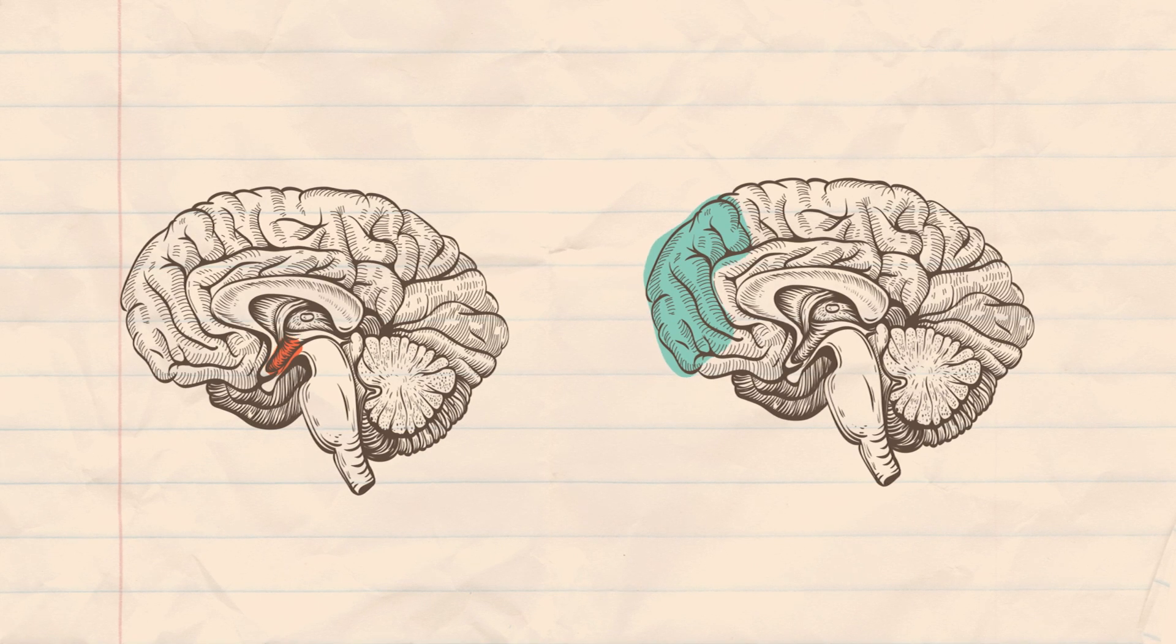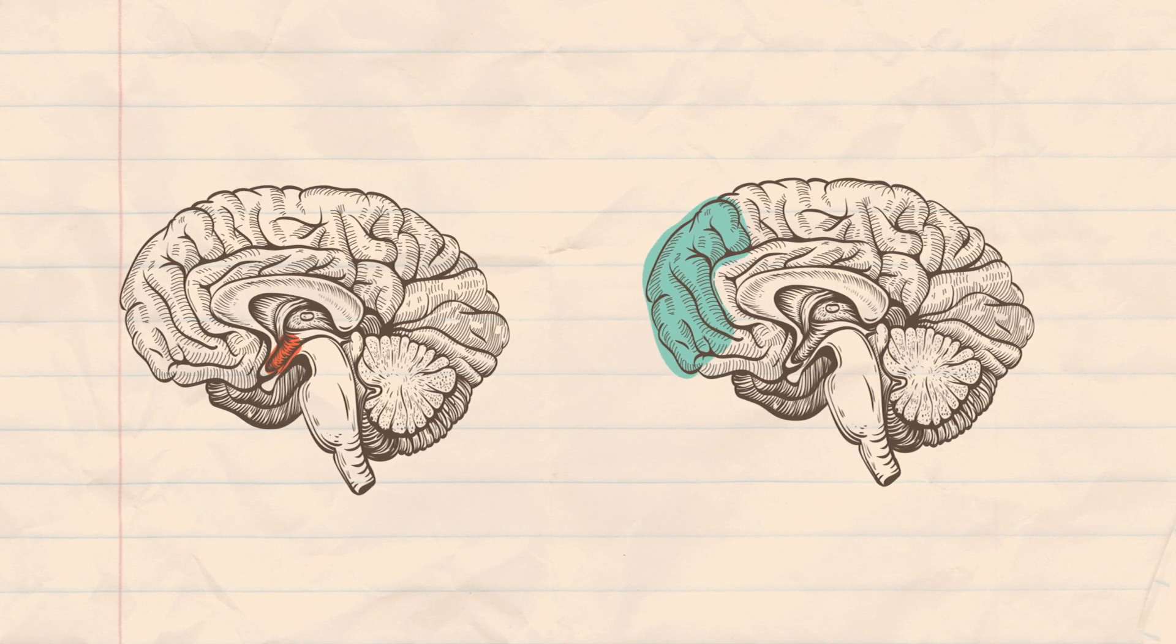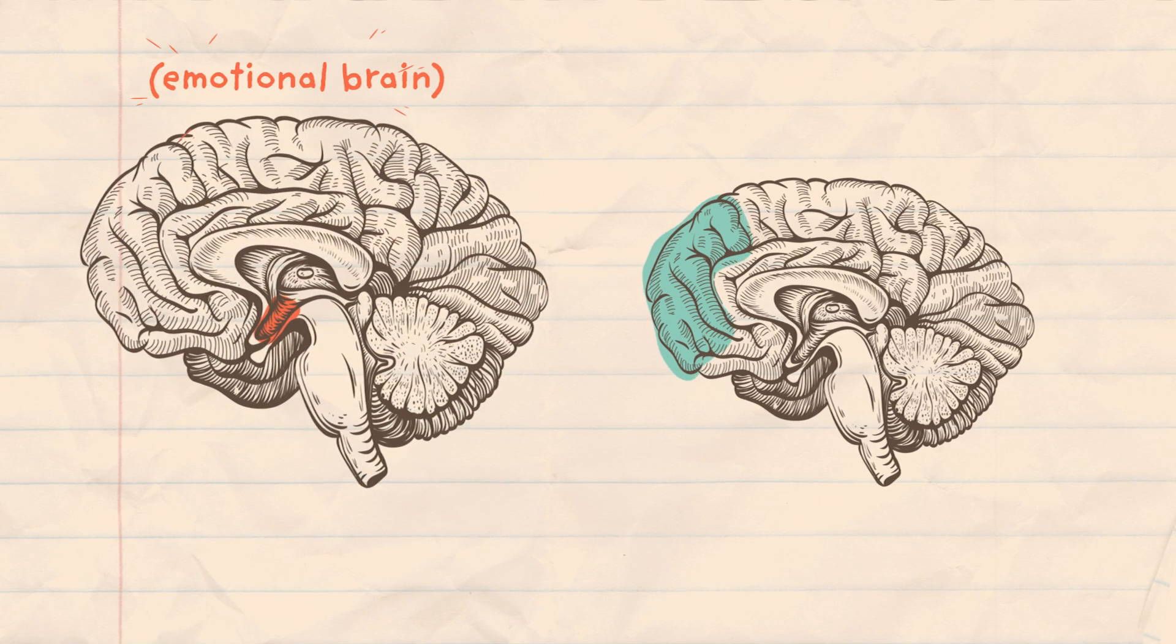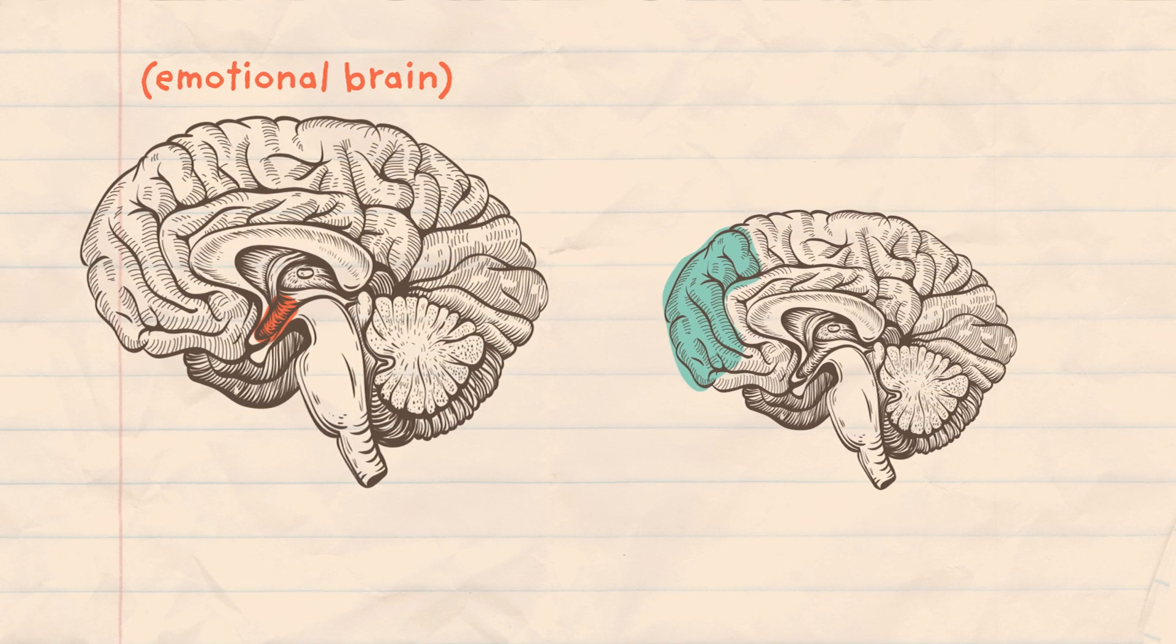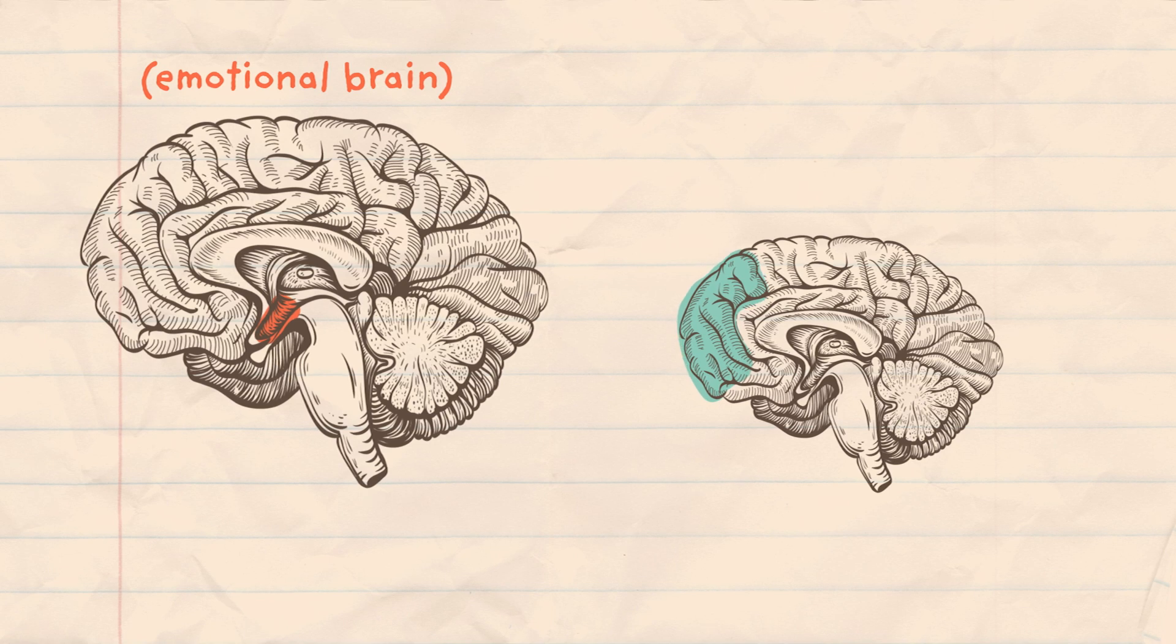Because of this, a young person's decision-making and problem-solving abilities are more heavily driven by the amygdala, the emotional brain, rather than the prefrontal cortex, the thinking brain.